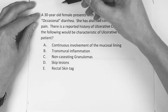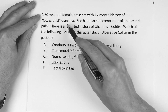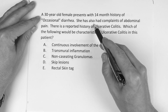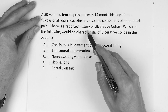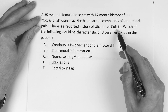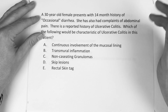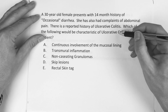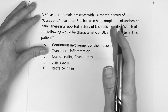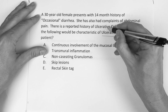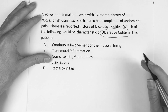Okay guys, so this question reads: a 30-year-old female presents with a 14-month history of occasional diarrhea and complaints of abdominal pain. There is a reported history of ulcerative colitis. Which of the following would be characteristic of ulcerative colitis in this patient? So this is really testing whether you understand the principles of ulcerative colitis and can differentiate it from Crohn's disease.